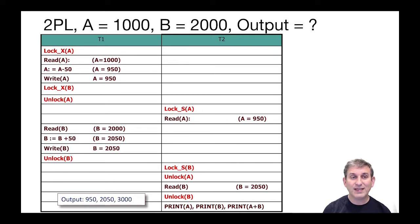Here we start with T1 getting an exclusive lock on A. It does a read of A, subtracts 50 in memory, and does a write back to the database. Then it goes ahead and acquires an exclusive lock on B — its lock acquisition phase is now done — and does its first unlock of A. Now T2 is scheduled, asks for a shared lock on A and gets it, does the read on A, sees 950. Meanwhile T1 runs again, reads B, sees 2000, adds 50 to B, writes it back for 2050, and unlocks B.